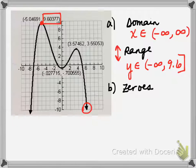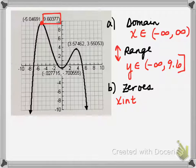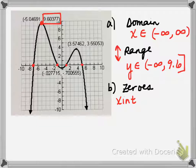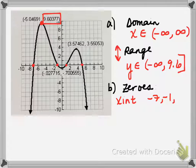Now for the zeros — remember the zeros, in this case, are the x-intercepts for this particular graph — so where the graph crosses the x-axis, and there are four of them. You can just list the zeros. The zeros are going to be negative 7, negative 1, 1, and 5.